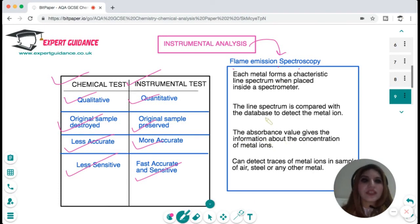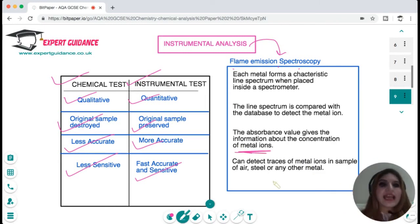Each metal forms a characteristic line spectrum when it is placed inside a spectrometer. We take a sample, place it inside a spectrometer, we get the line spectrum, we measure the absorbance value that gives us the concentration of the metal ions, and then we compare it with the database and that can give us information about the traces of the metals as well.